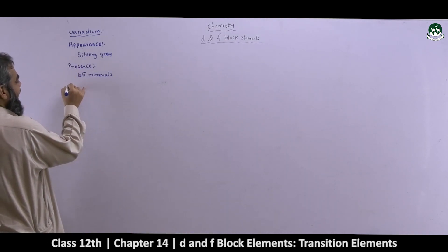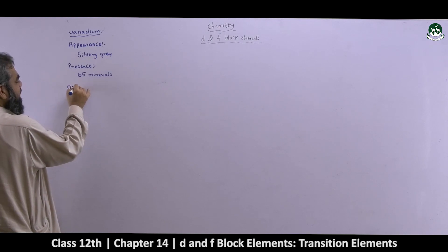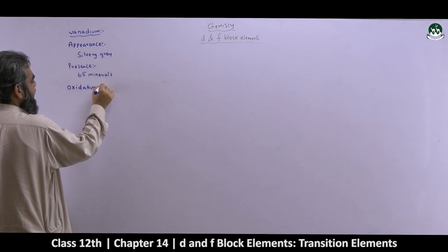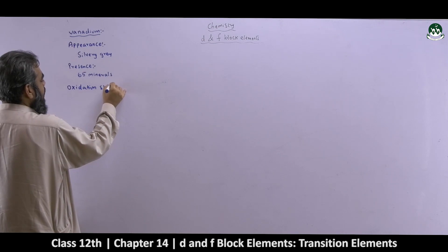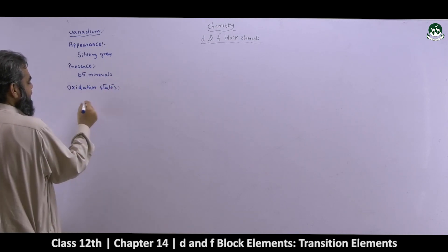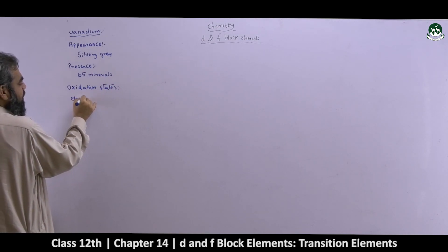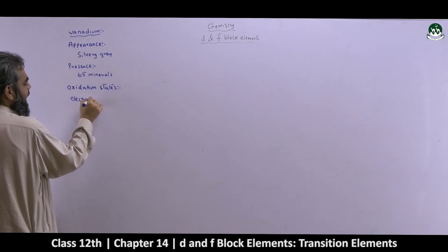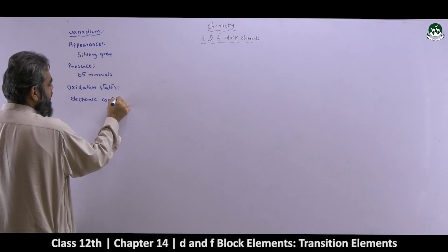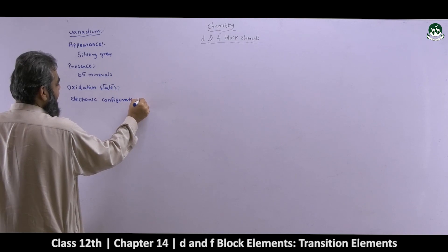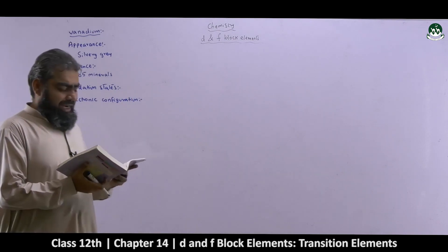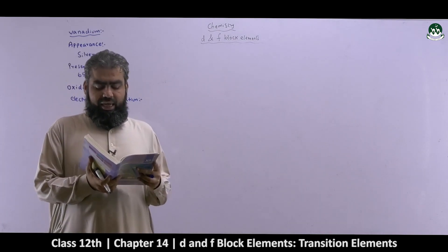We have to analyze its oxidation states. First of all, you have to have a look at its electronic configuration. Let's see the electronic configuration of Vanadium. What is the electronic configuration of Vanadium?